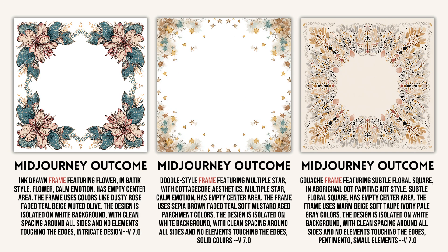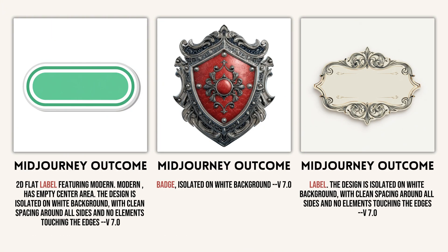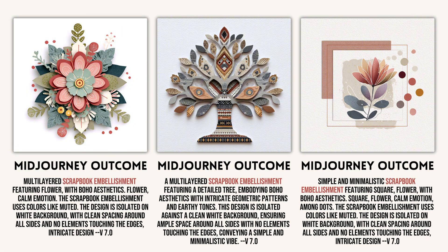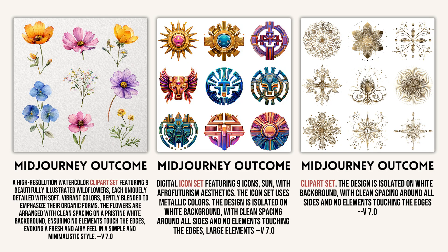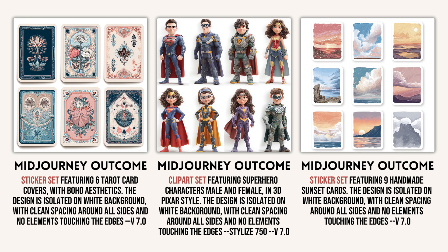Third, design invitation frames made of floral motifs, stars, or other decorative elements. Fourth, generate custom badges and labels that are perfect for product branding, junk journaling, or crafting projects. Fifth, make scrapbook embellishments — an excellent addition to memory books, junk journals, or any scrapbooking hobby. Sixth, craft black and white SVG designs that can be used for cutting machines or as icons for websites and apps. And finally, generate sets of clipart, icons, or stickers — ideal for creating cohesive bundles in a consistent style, or for producing multiple variations of a single object on one sheet.